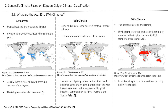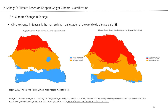The BWH climate type is called desert or arid climate. High heat dominates the summer months, and in the tropics constantly high temperatures occur all year around. In winter, temperatures can drop below freezing at night. In this part of the presentation, we are going to examine climate change and its effects on Senegal using some maps.